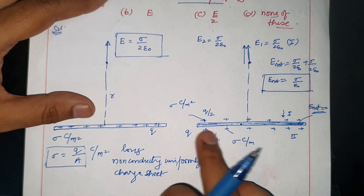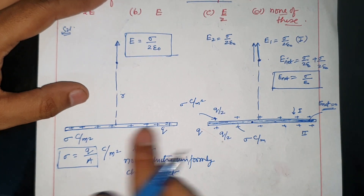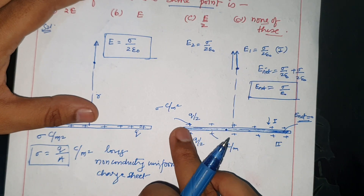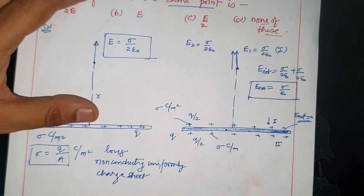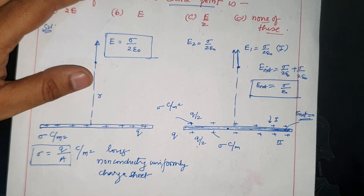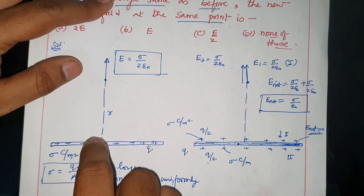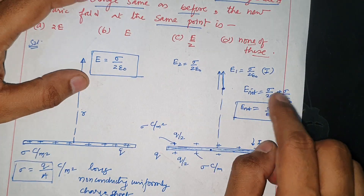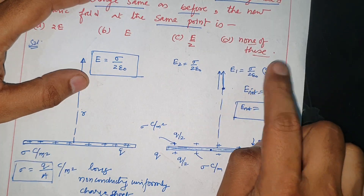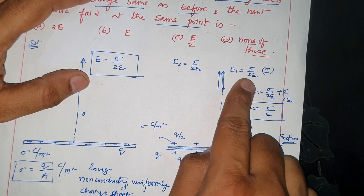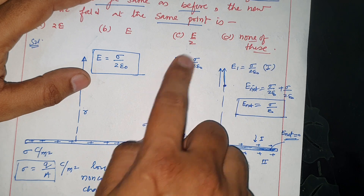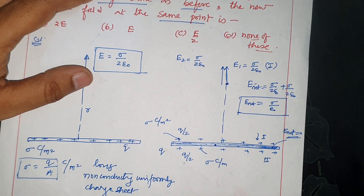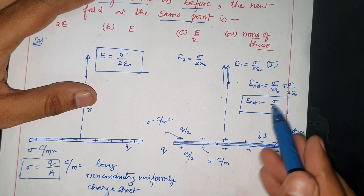The conducting sheet had total charge Q, but it was split into two layers of Q/2 each. Each layer contributes σ/(2ε₀). So the net electric field for the conducting sheet is E1 + E2 = σ/(2ε₀) + σ/(2ε₀) = σ/ε₀.